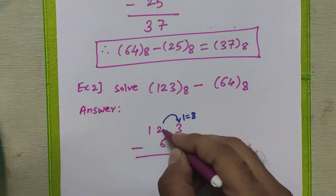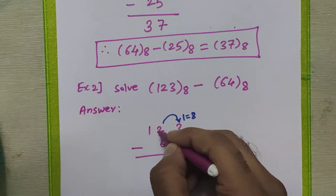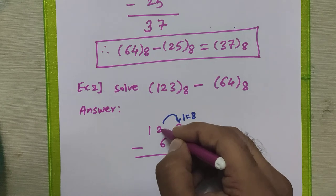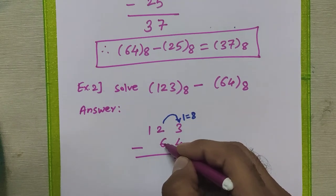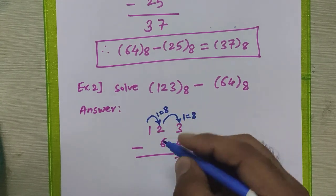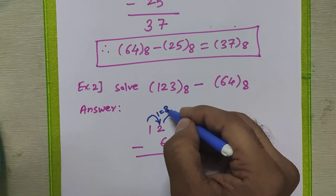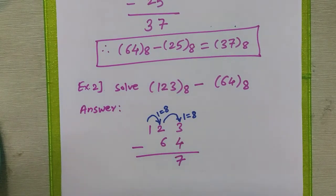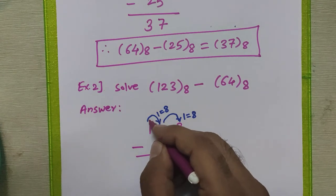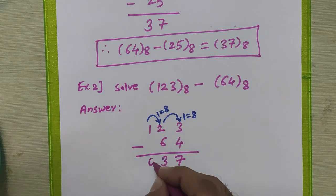We took 1 borrow from the middle digit, so it becomes 1. Now 1 minus 6 is not possible, so we take 1 borrow from the next digit — again equal to 8. So 8 plus 1 is 9, and 9 minus 6 is 3. Since we gave 1 borrow from the leftmost digit, that 1 becomes 0, which is written as is.